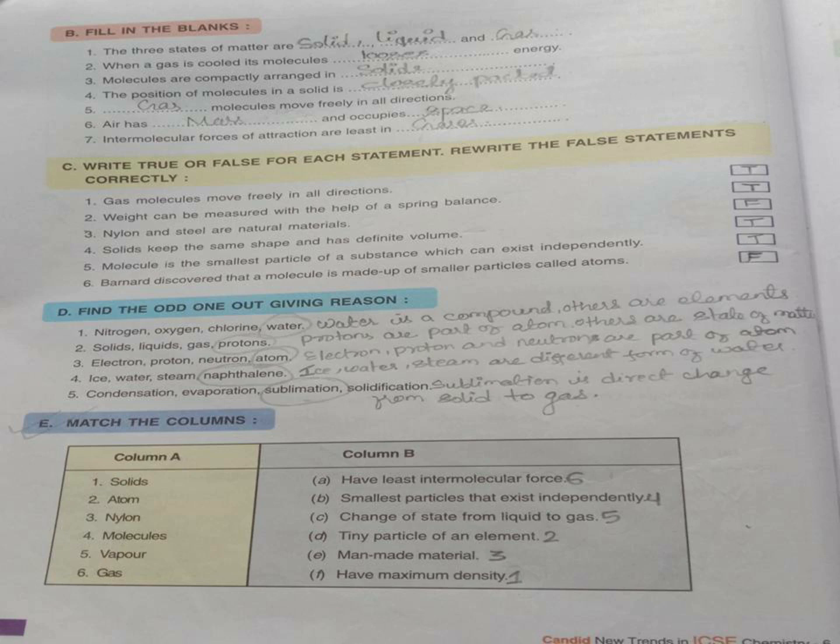Number D, find the odd one out, giving reason. Number 1, nitrogen, oxygen, chlorine and water. Water is odd because water is a compound made up of hydrogen and oxygen. Whereas, nitrogen, oxygen and chlorine are elements. Number 2, solid, liquid, gas, proton. Proton is odd because solid, liquid and gas are the states of matter.